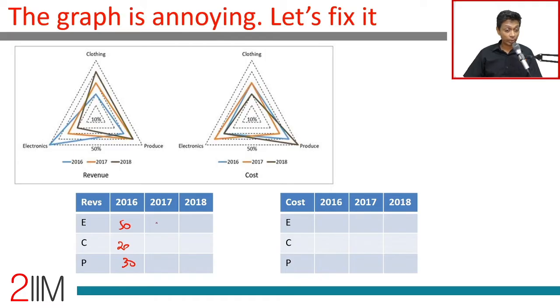Revenue data: 2016 — electronics 50%, clothing 20%, produce 30%, adding up to 100%. 2017 (orange line) — electronics 30%, clothing 40%, produce 30% ... wait, 30, 40, then the green line for 2018 — electronics 20%, clothing 40%, produce 40%.